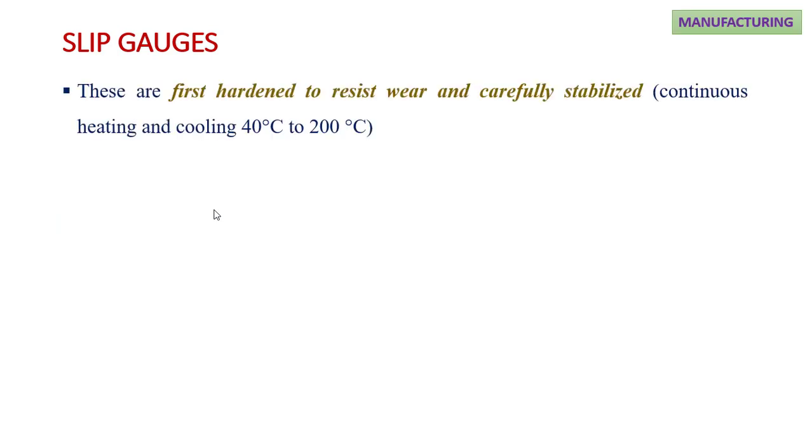These gauges are first hardened to resist wear, then carefully stabilized. Stabilization is nothing but continuous heating and cooling from 40 degree Celsius to 200 degree Celsius.